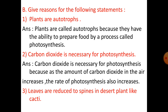Section B — Give reasons for the following statements. Number one: Plants are autotrophs because they have the ability to prepare food by a process called photosynthesis. Number two: Carbon dioxide is necessary for photosynthesis because as the amount of carbon dioxide in the air increases, the rate of photosynthesis also increases.